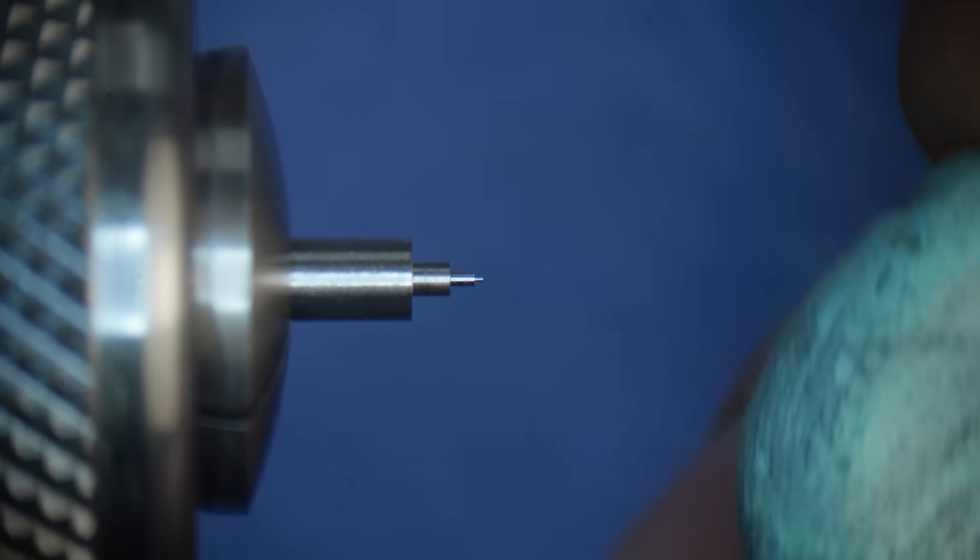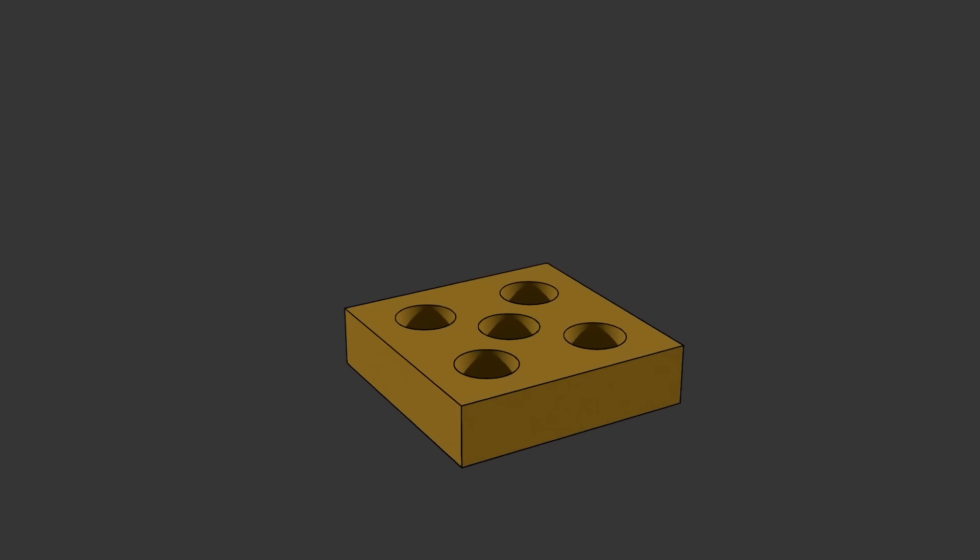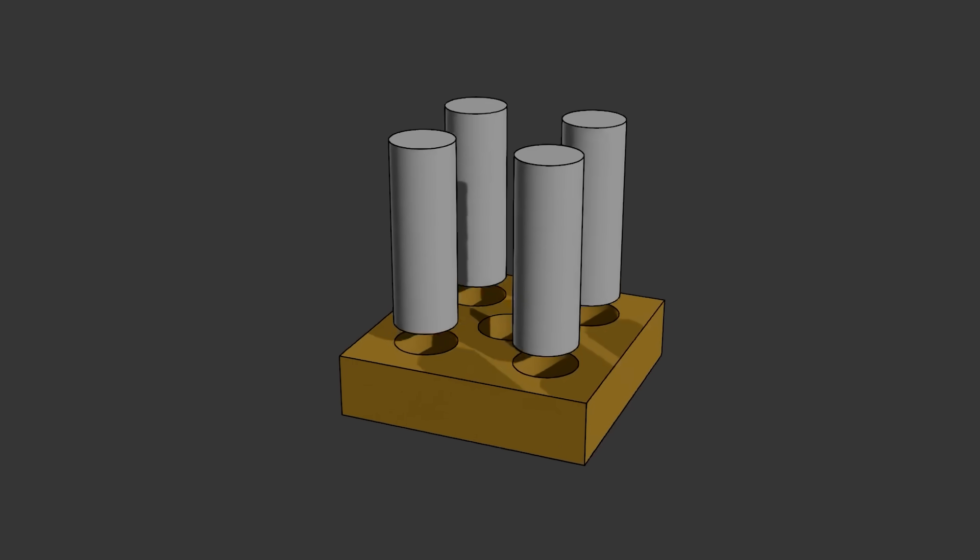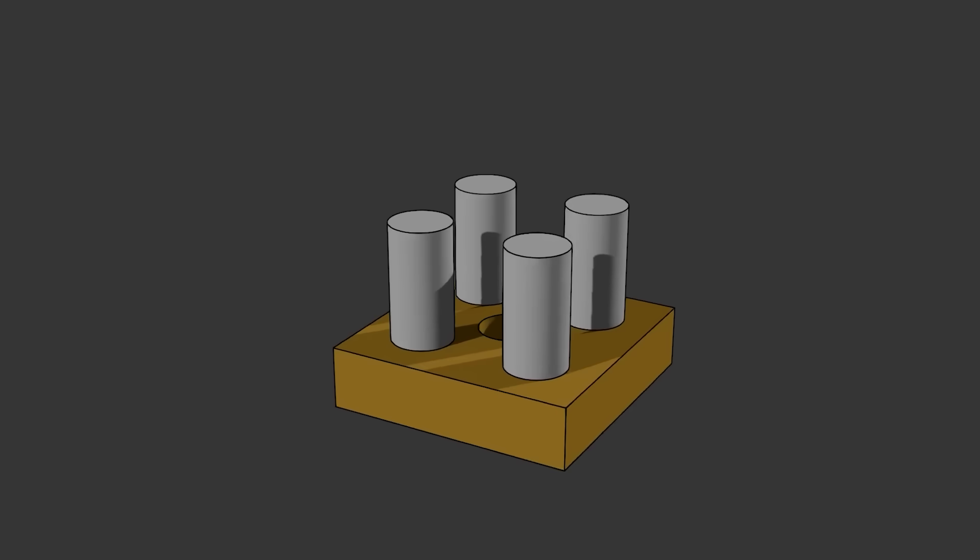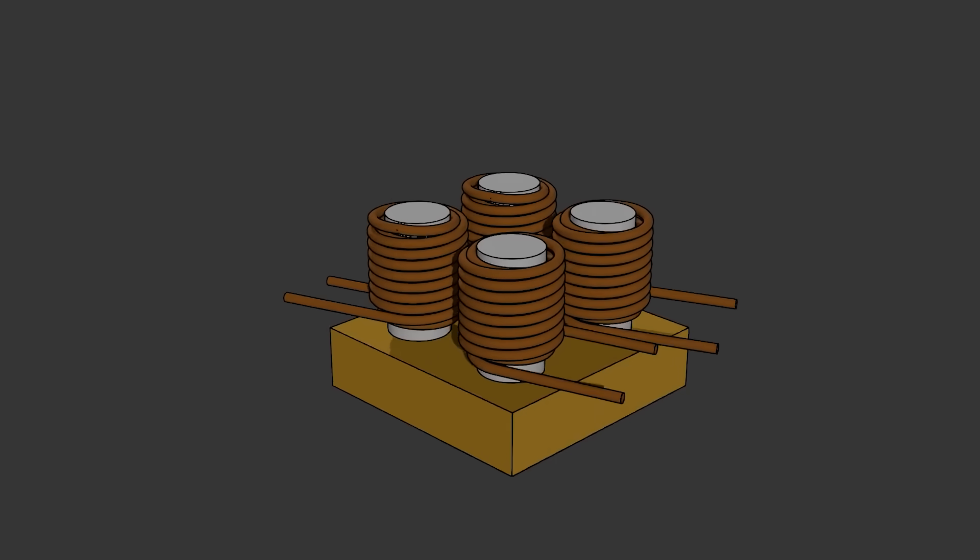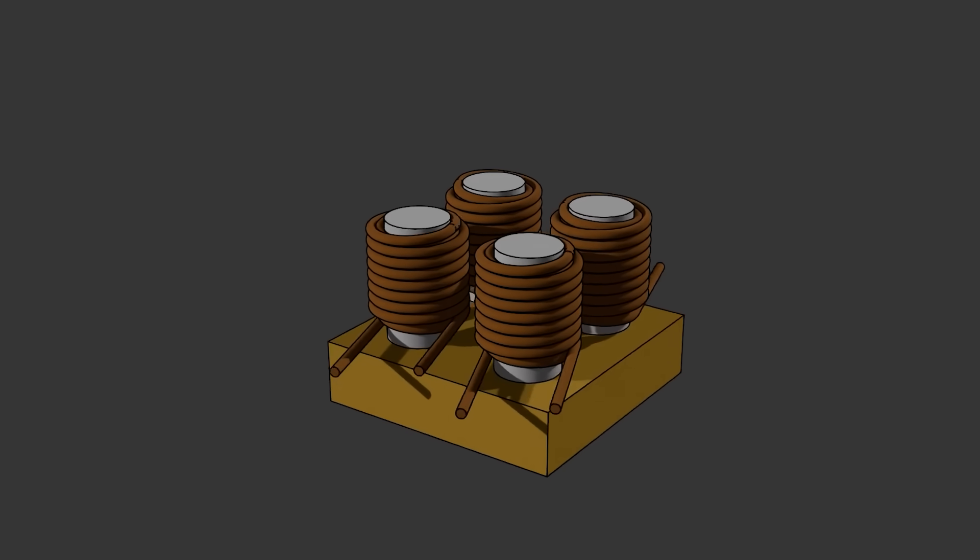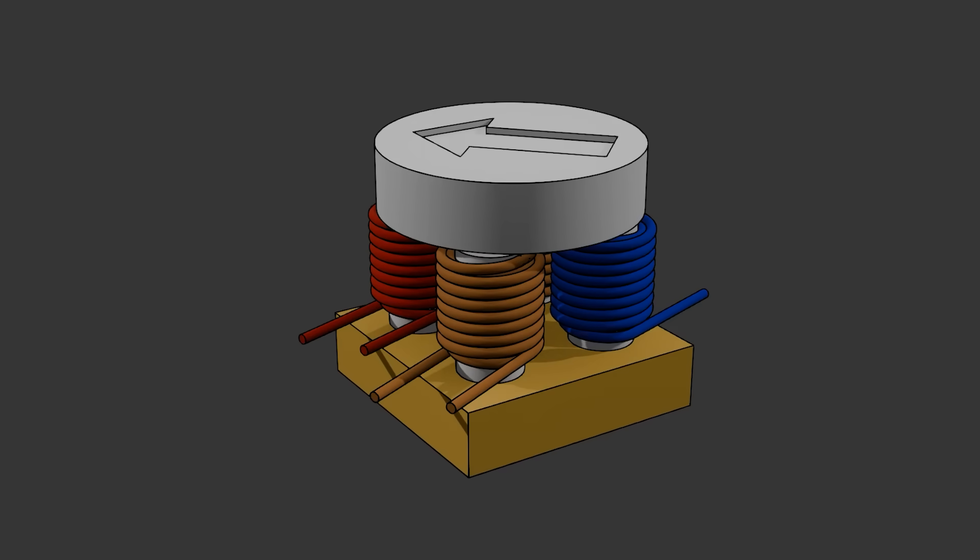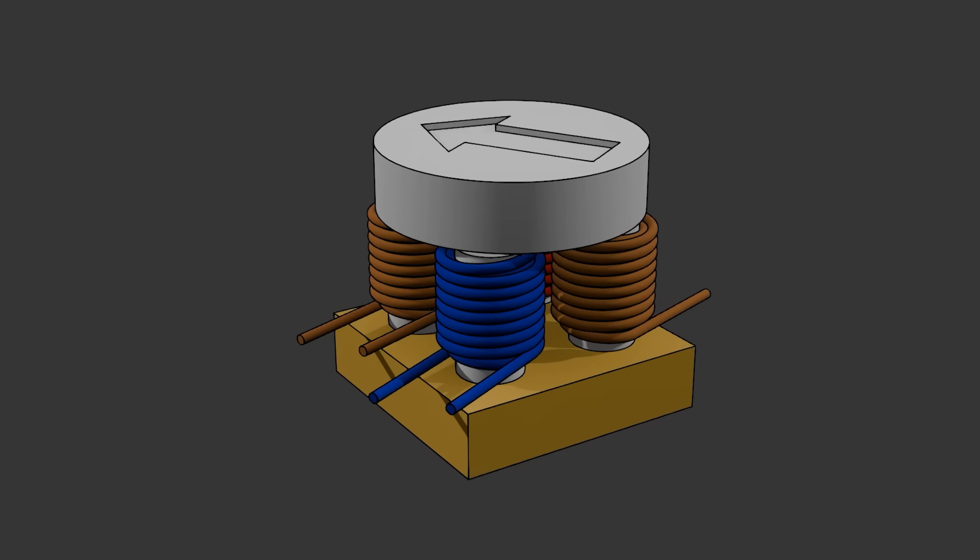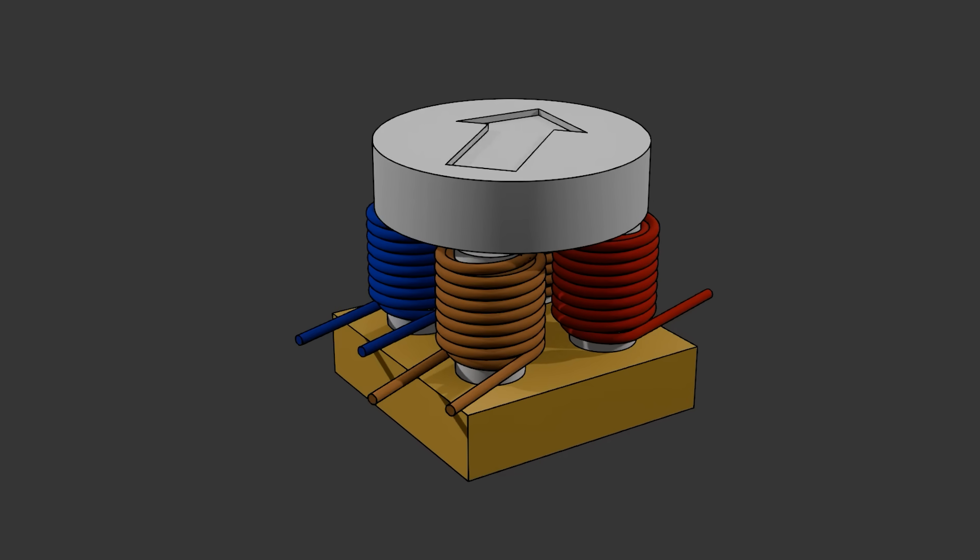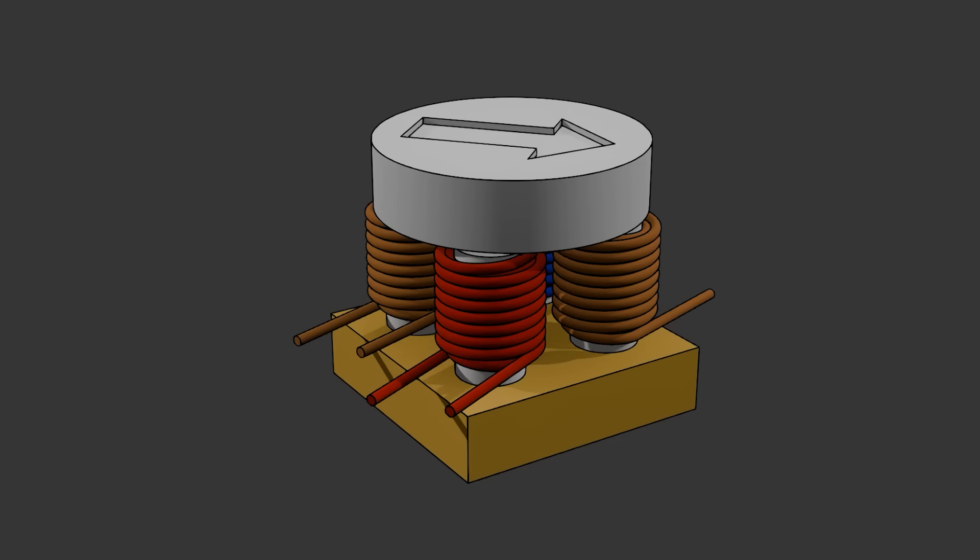To stand a chance of making a motor at this scale, it has to be very simple. The idea here is four electromagnets are attached to a base plate, and the rotor sits between the electromagnets. By energizing diagonal pairs of coils with opposite polarities, the hope is we can rotate the magnetized rotor.